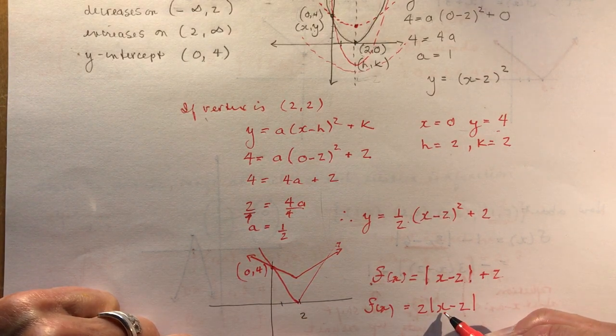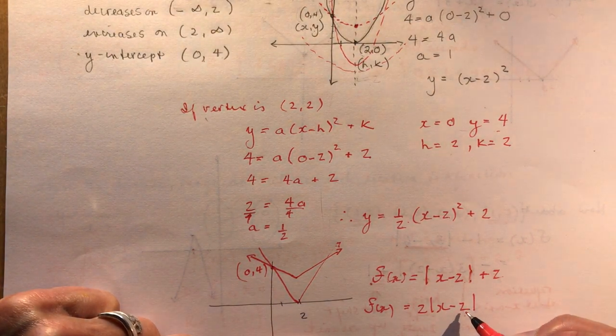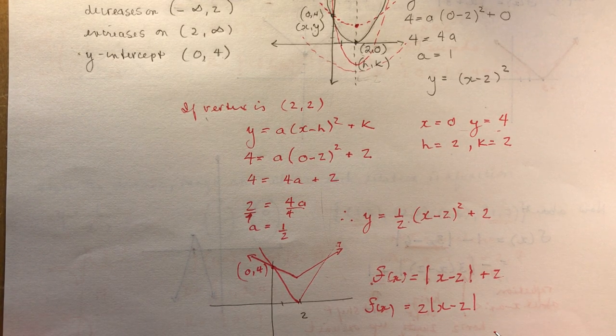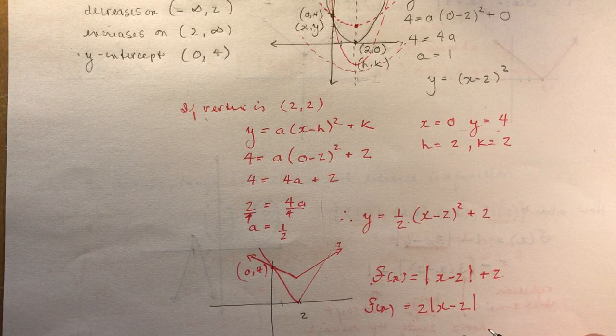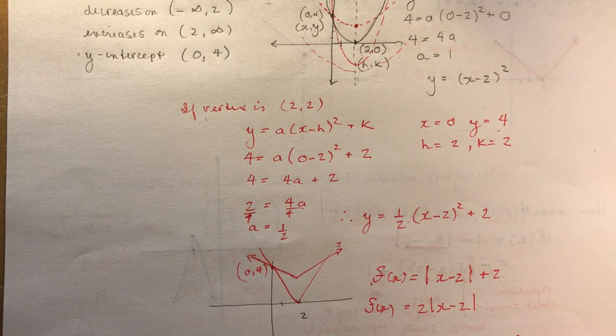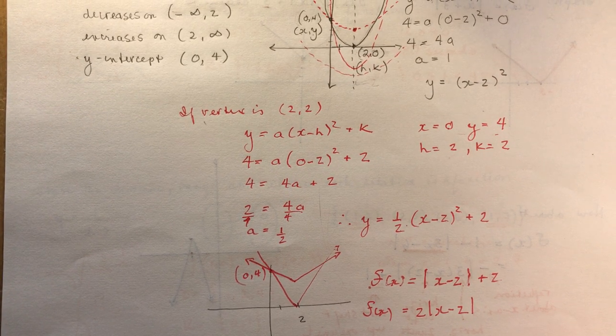And if I put in 0 here, 0 minus 2, the absolute value of minus 2 is 2 times 2 is 4. And so, yes, there are more than one possibility. There is more than one possibility. Okay, hope that helped you out. Sid, all the best.